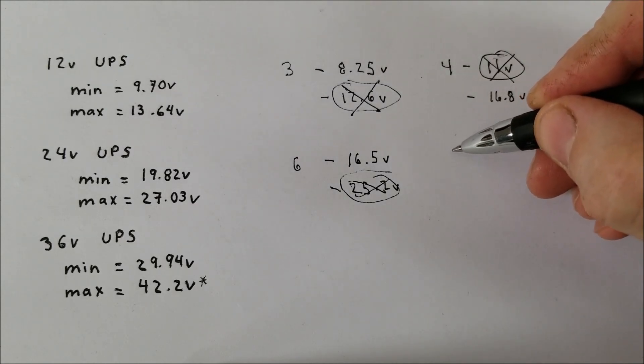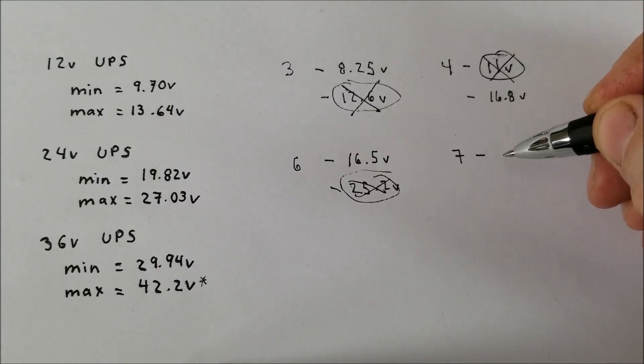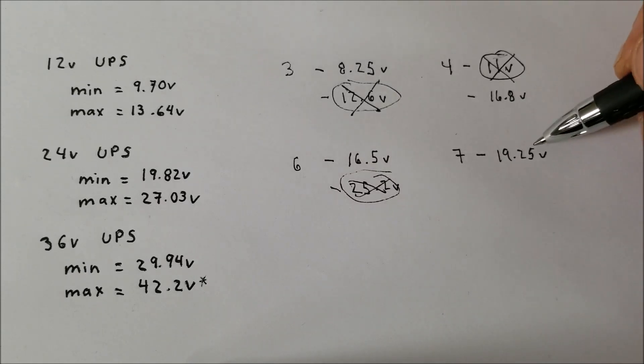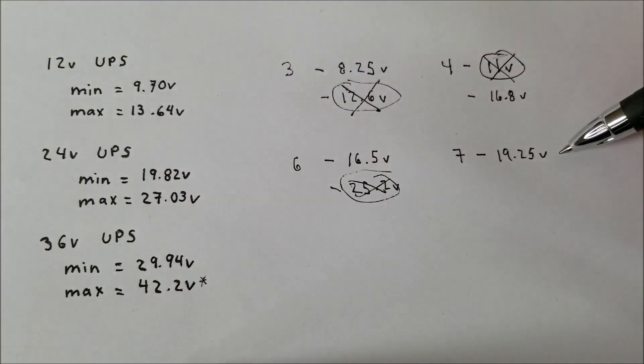Now if we try 7 cells in series. So if we go with 7 cells times 2.75V, we get 19.25V, which is below 19.82V. So that would be fine.